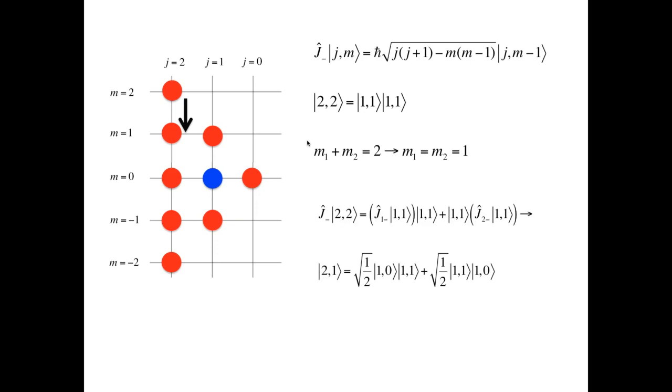We apply J minus to this state, keeping in mind that, first, it has to be applied both on the left side and on the right side, and two, that it must be split into J1 minus and J2 minus, such that J1 minus acts only on state |J1,M1⟩, and J2 minus acts only on state |J2,M2⟩.